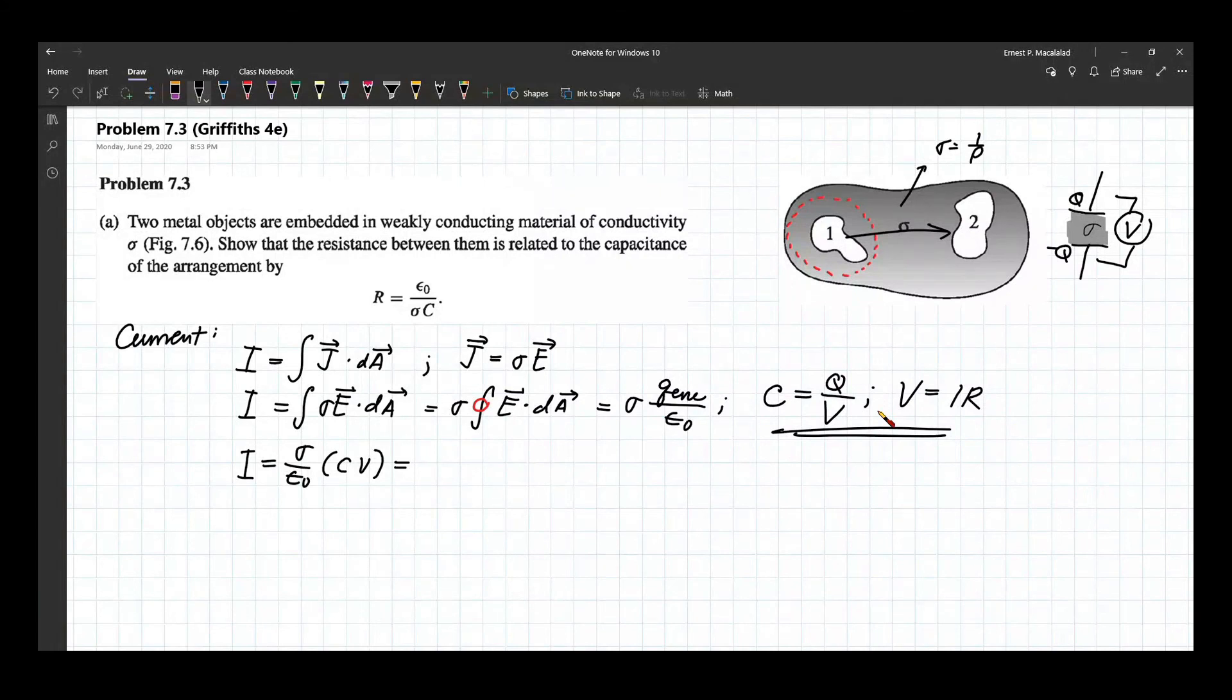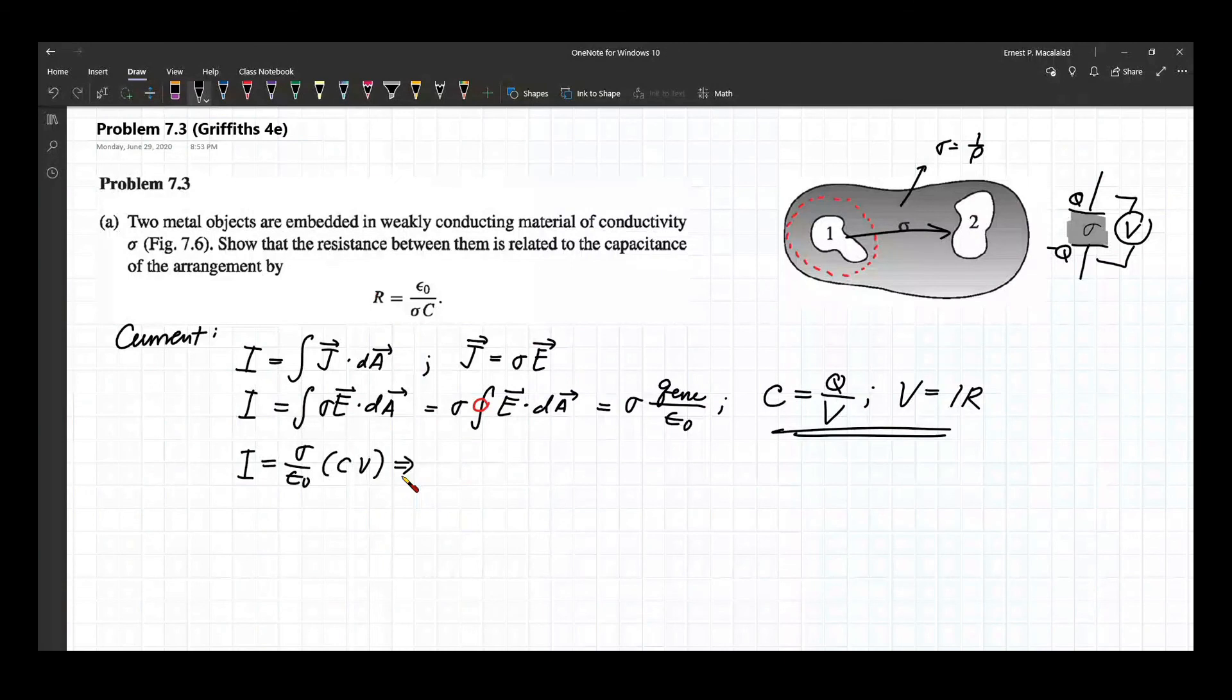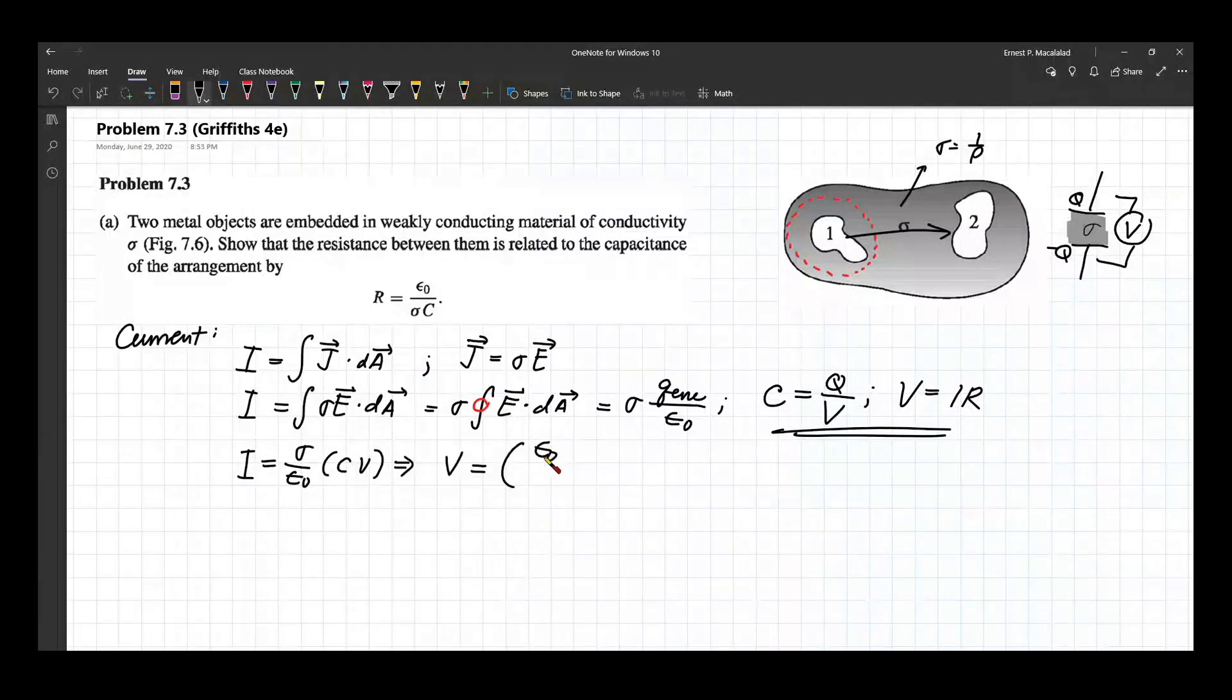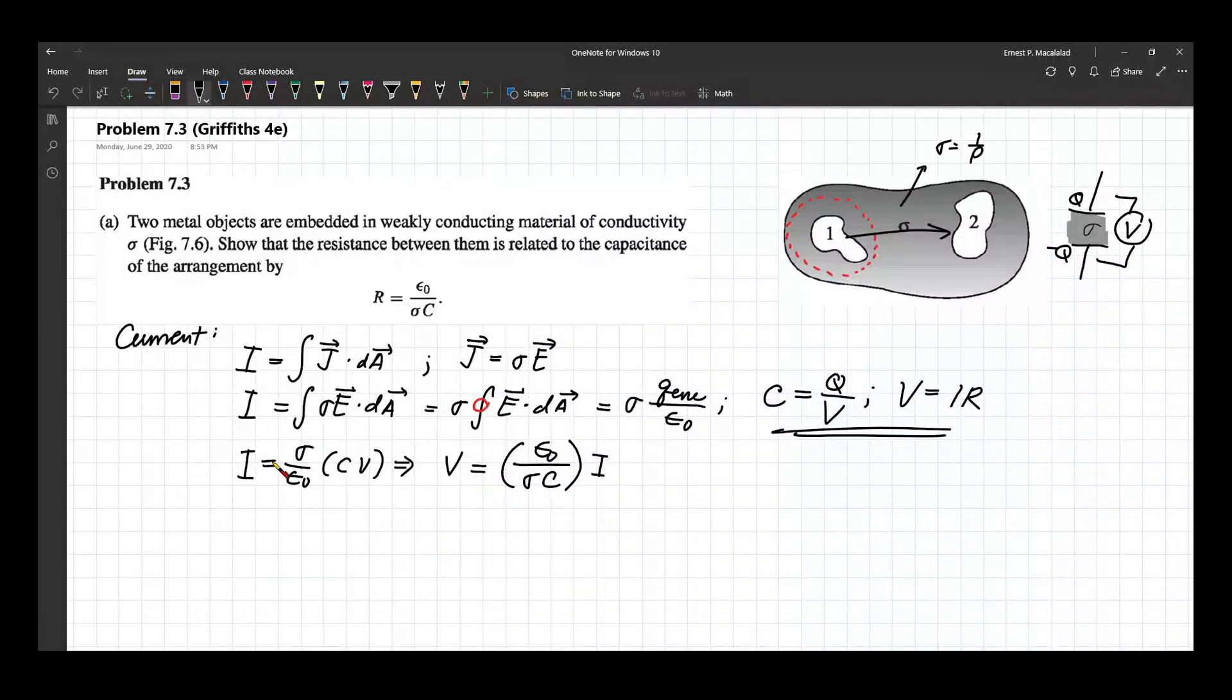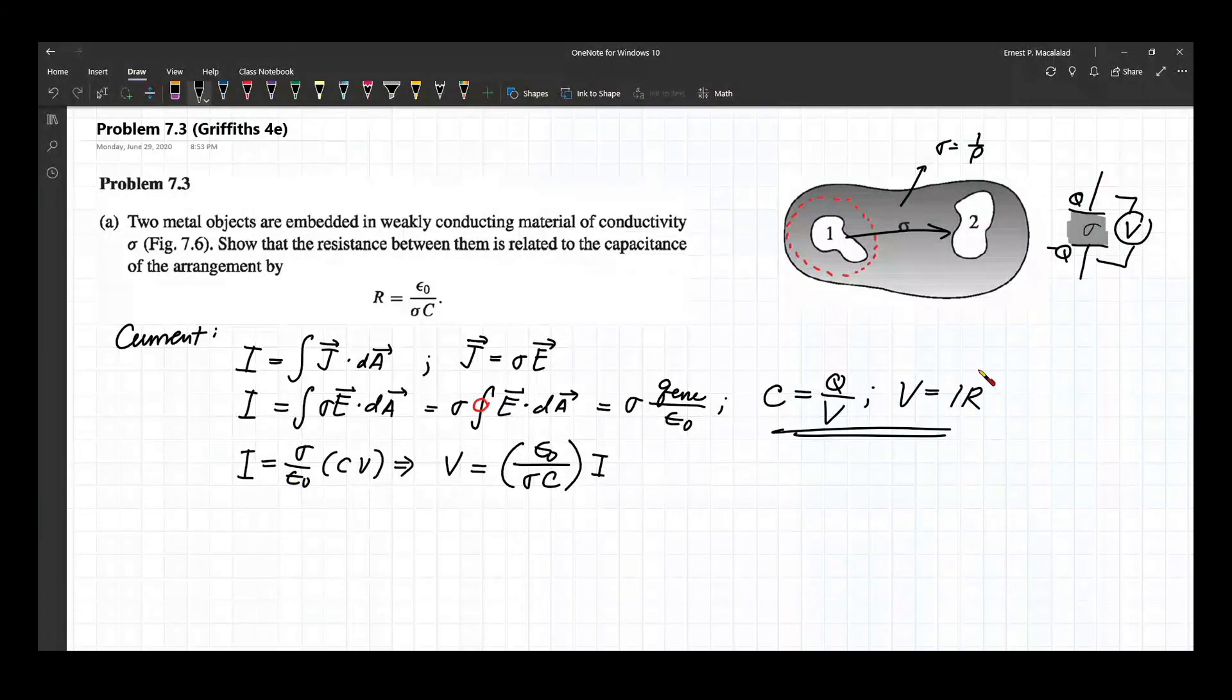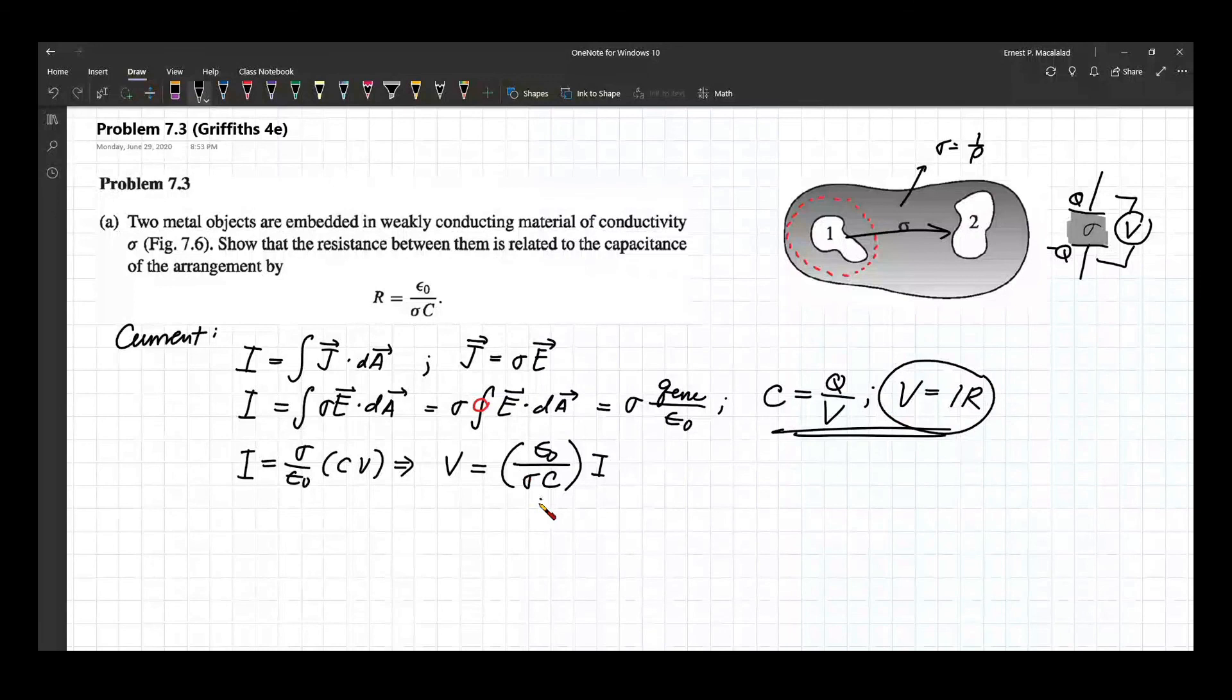So V will now be equal to epsilon naught over sigma C times I. So here I just rearranged this equation in this form and by virtue of Ohm's law this will be your R.